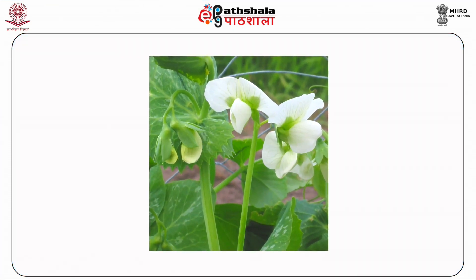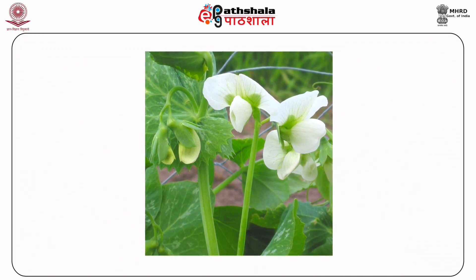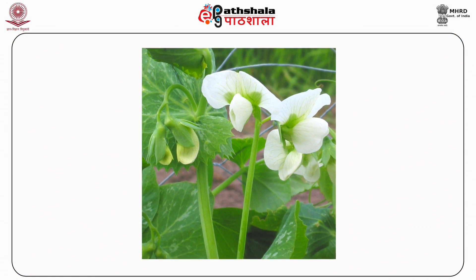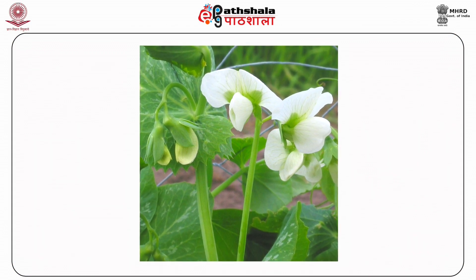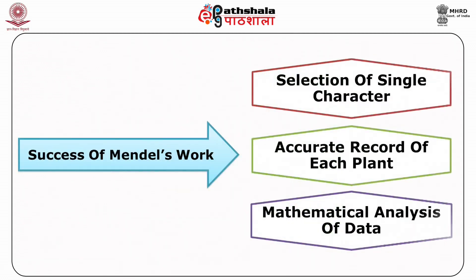Mendel's experimental approach. Mendel's research was with the pea plant, i.e., Pisum sativum, which began in 1856 in his own monastery garden. The success of Mendel's work was because of the following reasons: first, selection of a single character; second, keeping accurate record of each plant; and third, mathematical analysis of data.